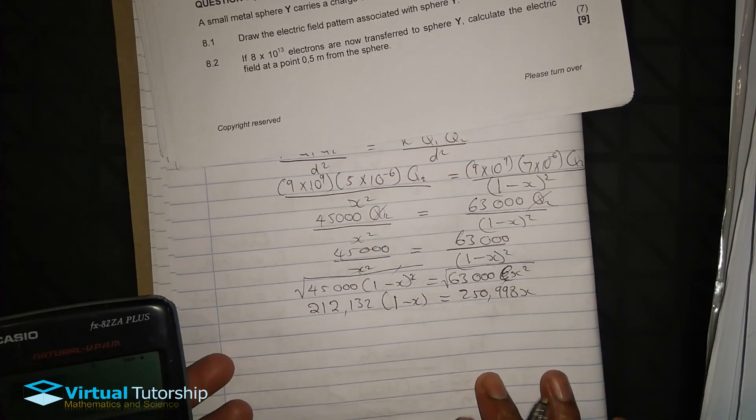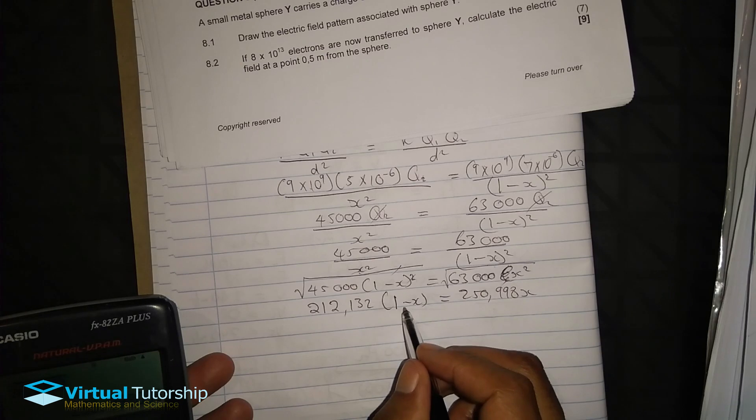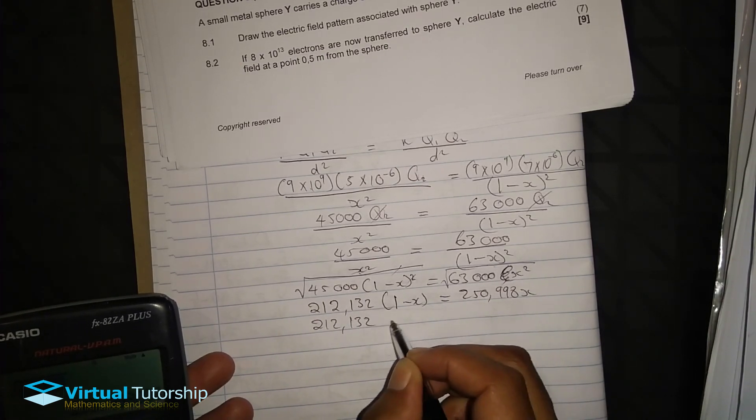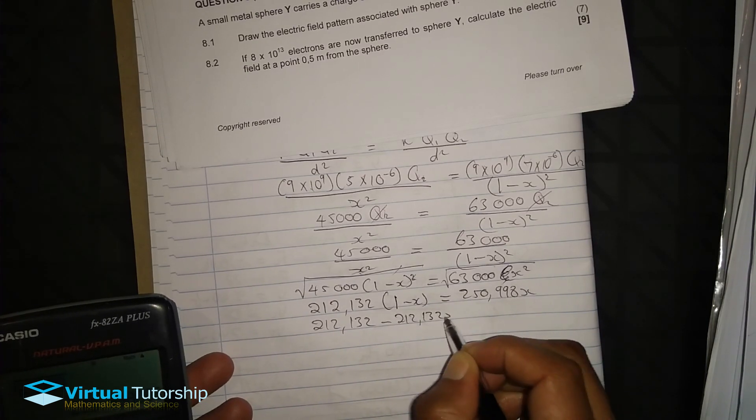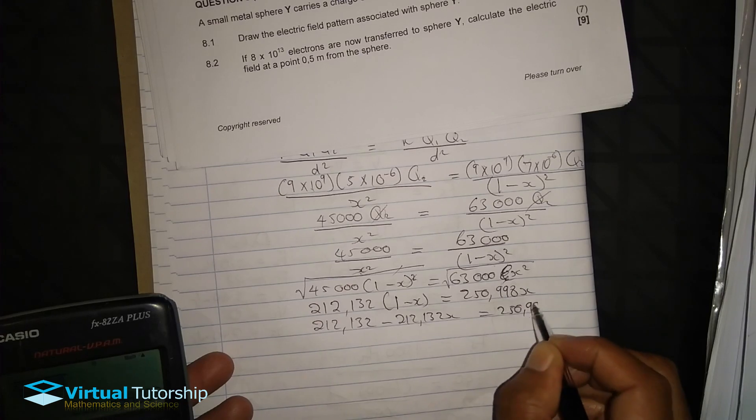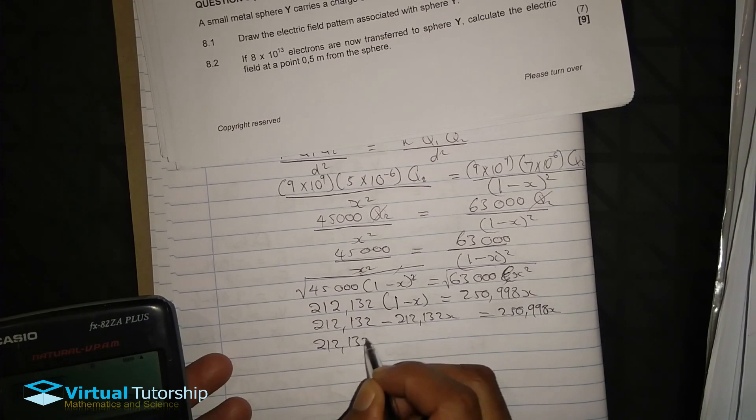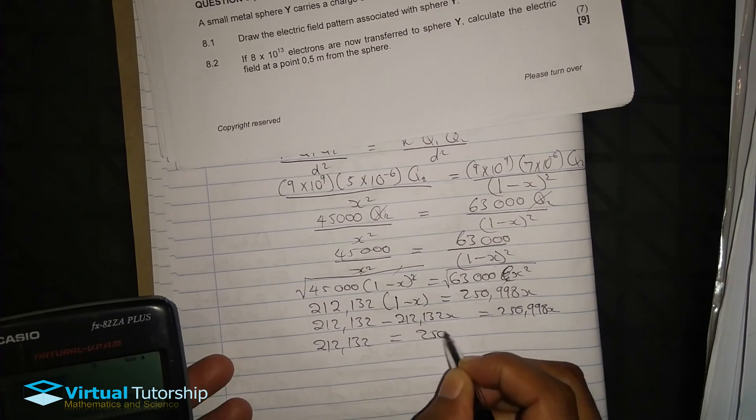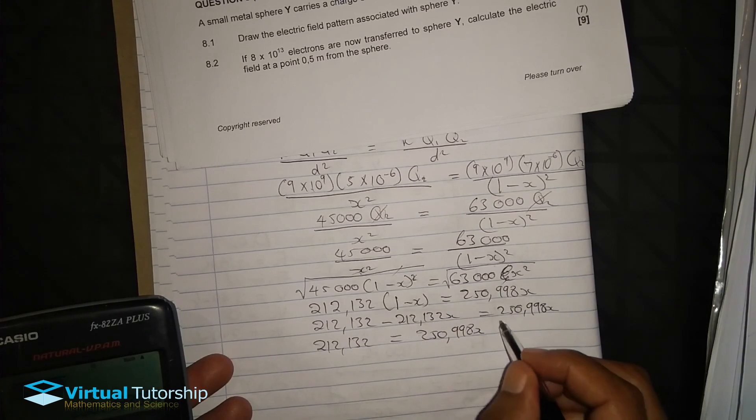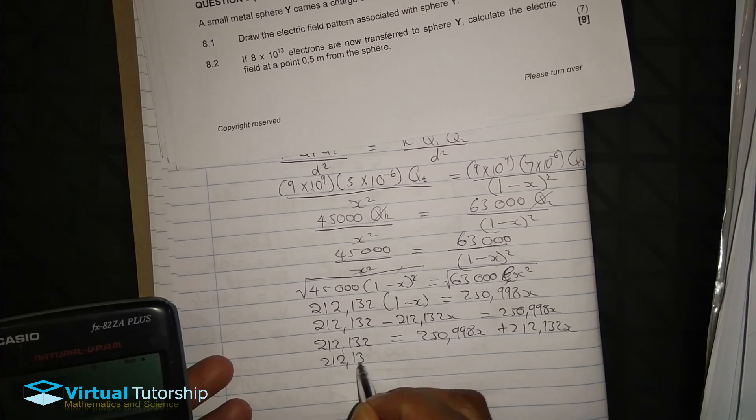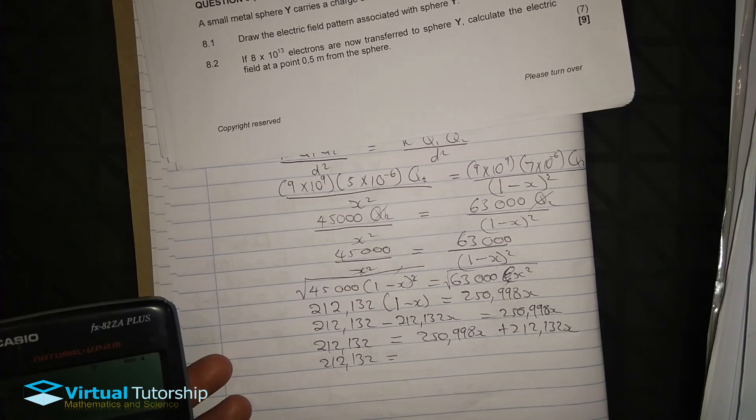So we have X. Distribute the number inside the bracket, 212.132 minus 212.132X equal to 250.998X. Let's group X together, so 212.132 equals 250.998X plus 212.132. The answer is 463.13X.